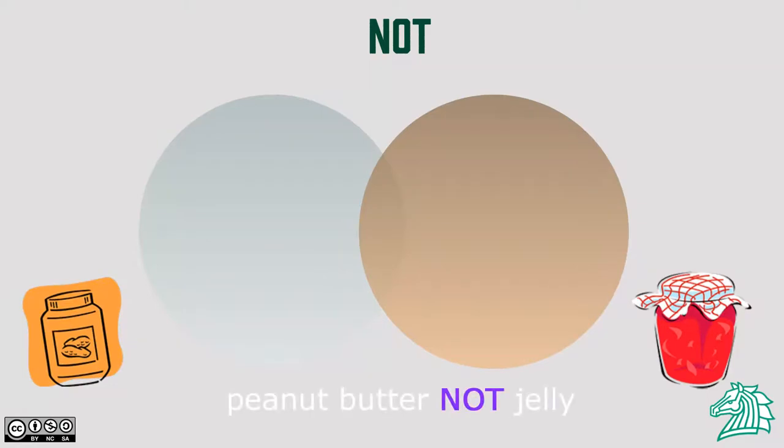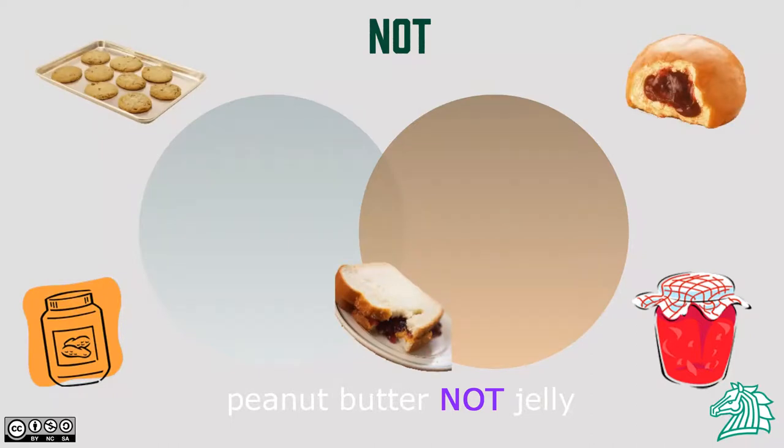For this last search, we want to look for everything that mentions peanut butter, but leave out anything that might mention jelly. By typing NOT between these two phrases, our search will turn up resources for peanut butter and jelly sandwiches.